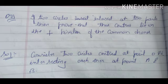Next, the third question: if two circles intersect at two points, then prove that their centers lie on the perpendicular bisectors of the common chord. We have to consider that the centers are O and O', intersecting each other at points A and B.